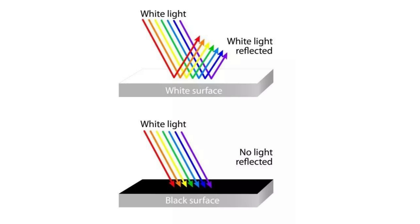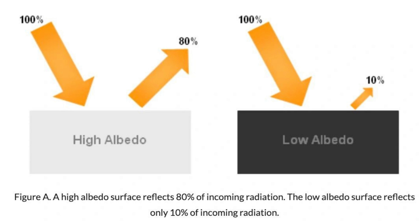Surface and heat absorption: the color of an object influences its ability to absorb or reflect heat from the surrounding environment. Dark colored surfaces such as black have a higher propensity to absorb heat because they absorb more light energy. This is why on a sunny day you'll notice that black surfaces such as asphalt feel hotter than lighter colored surfaces like concrete or sand.